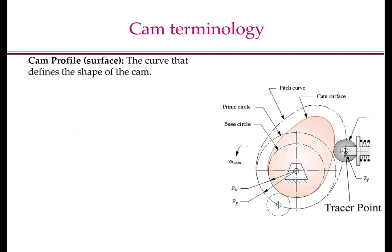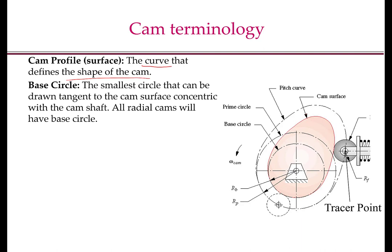Let us introduce some common terminology in cams. The cam profile is the curve that defines the shape of the cam — this colored line in the picture shows the cam profile. The base circle of a cam is the smallest circle that can be drawn tangent to the cam surface or cam profile and concentric with the camshaft. The dotted circle shown in the picture is the base circle, and all radial cams will have a base circle.